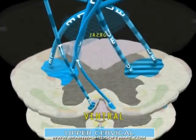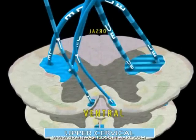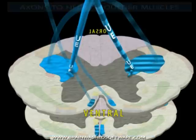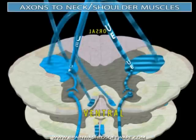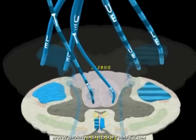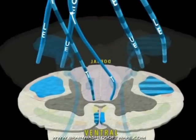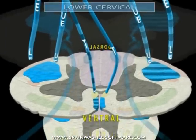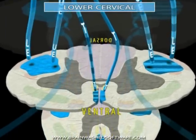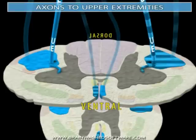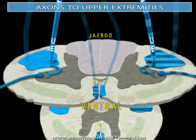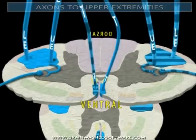At upper cervical levels, the lateral corticospinal tract influences lower motor neurons going to neck and shoulder muscles. The medial fibers in the lateral corticospinal tract at cervical levels influence lower motor neurons that innervate upper extremity musculature, especially distal muscles.